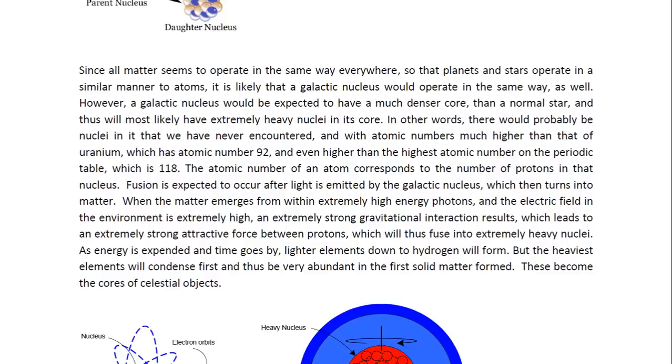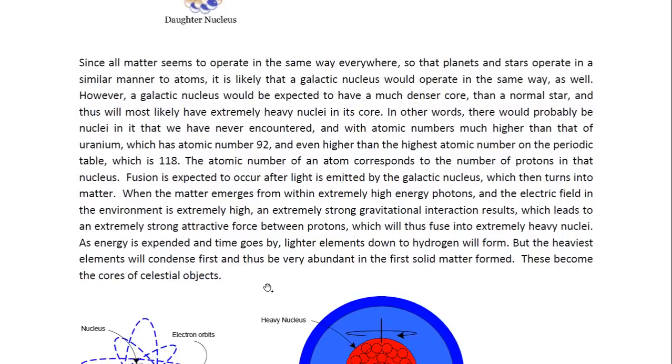Fusion is expected to occur after light is emitted by the galactic nucleus, which then turns into matter. When the matter emerges from within extremely high-energy photons and the electric field in the environment is extremely high, an extremely strong gravitational interaction results, which leads to an extremely strong attractive force between protons, which will thus fuse into extremely heavy nuclei. As energy is expended and time goes by, lighter elements down to hydrogen will form, but the heaviest elements will condense first and thus be very abundant in the first solid matter formed. These become the cores of celestial objects.